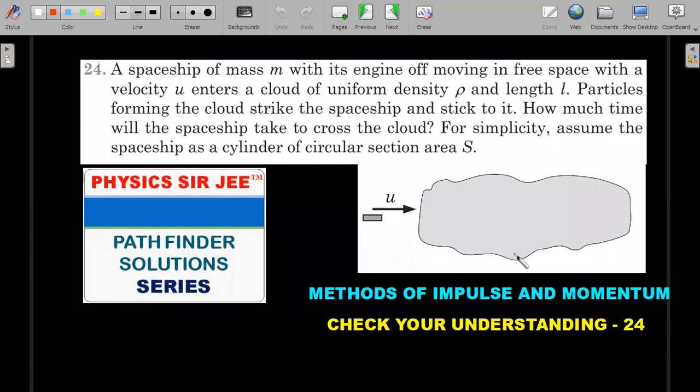Let's start with the formal wording of the first question. A spaceship of mass m with its engine off, moving in free space with velocity u, enters a cloud of uniform density ρ and length l. Particles forming the cloud strike the spaceship and stick to it. How much time will the spaceship take to cross the cloud? For simplicity, assume the spaceship is a cylinder of circular cross-section S. I hope you picked up those things from reading.